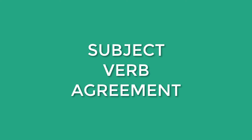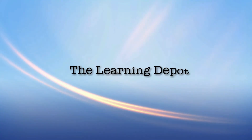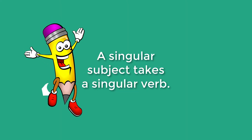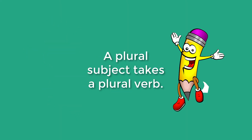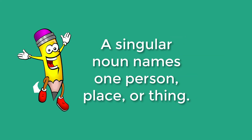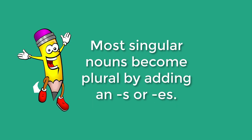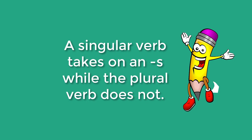In today's lesson, we will learn about subject-verb agreement. You already know that a singular subject takes a singular verb, and a plural subject takes a plural verb. As a reminder, a singular noun names one person, place, or thing. When we turn a singular noun into a plural noun, we generally add an S or an ES. On the contrary, a singular verb takes on an S, while the plural verb does not.